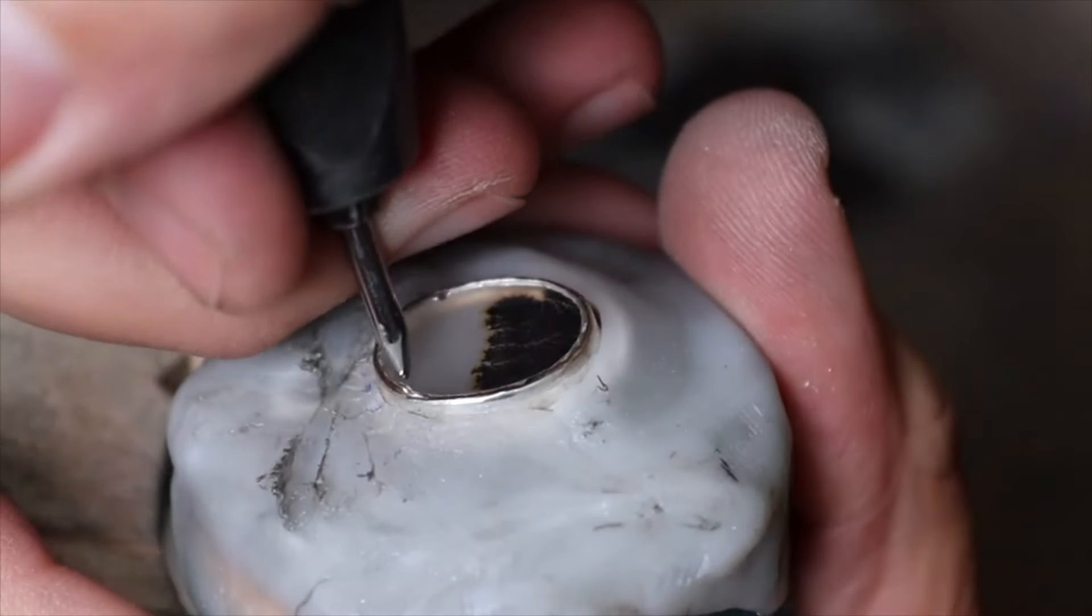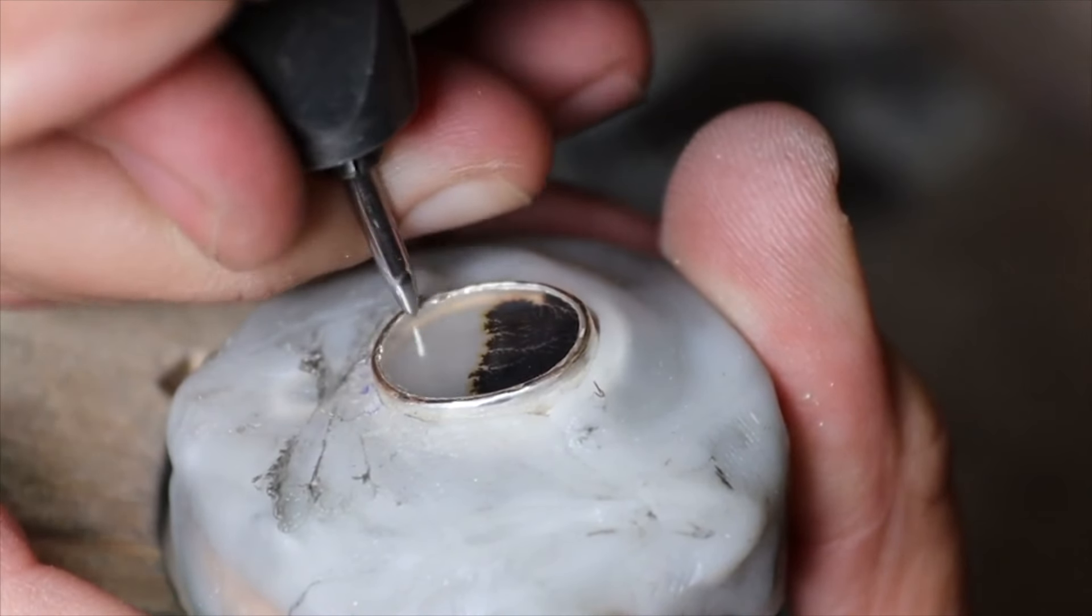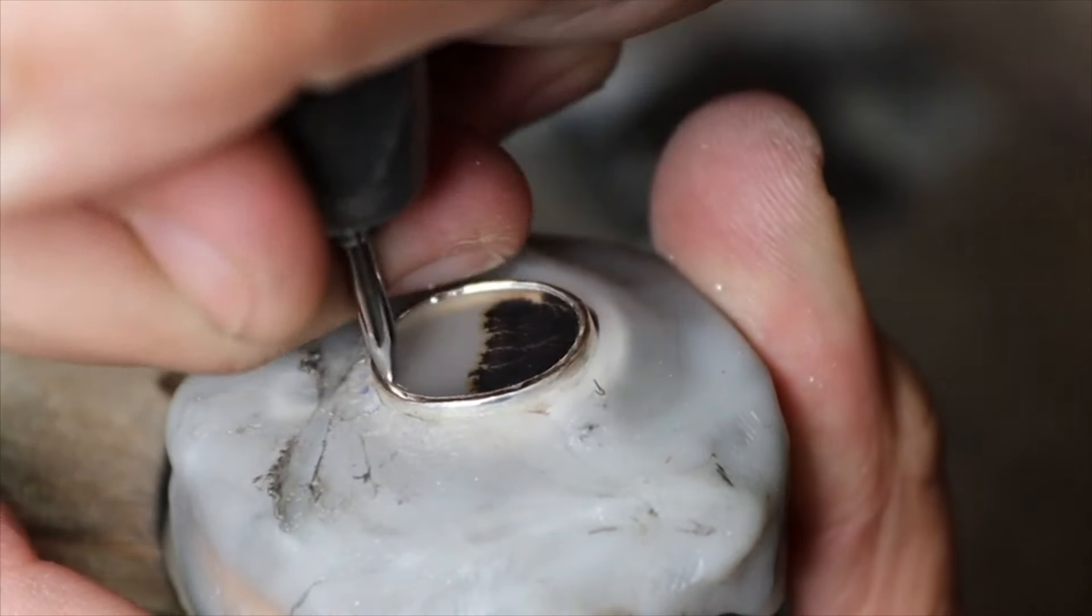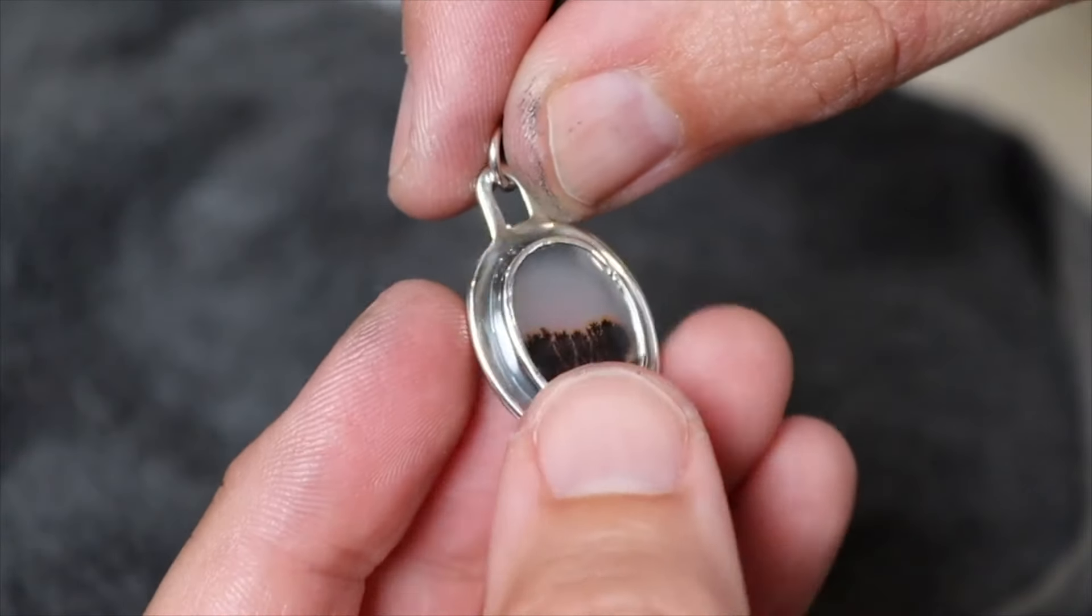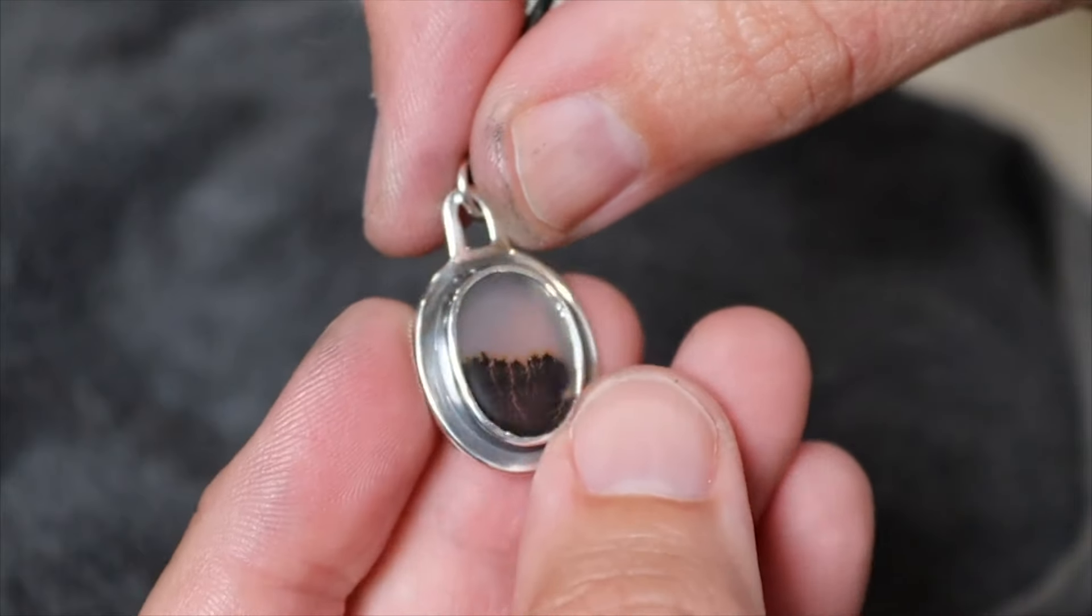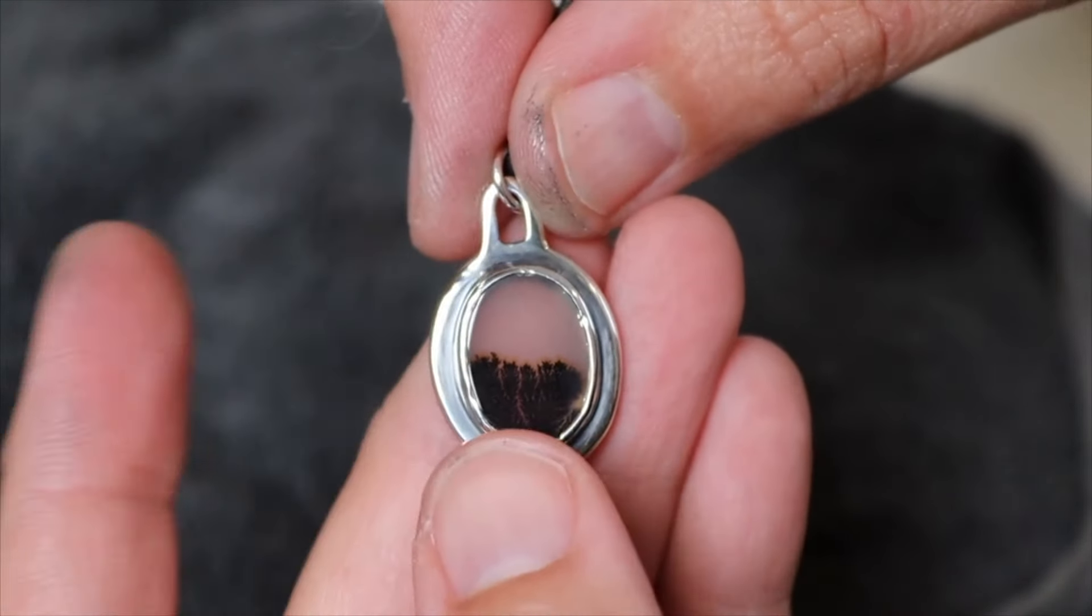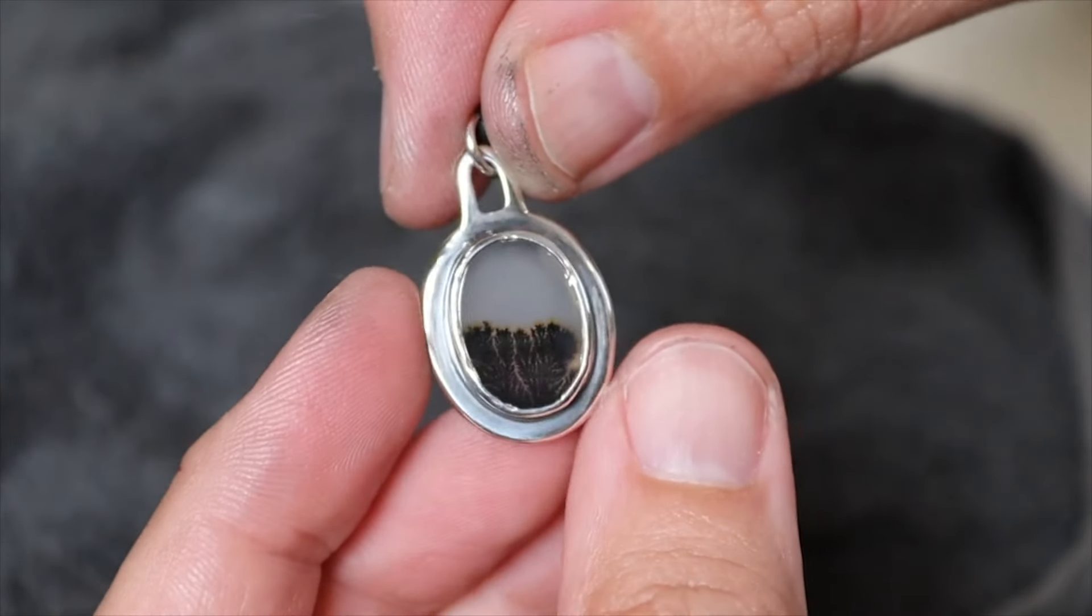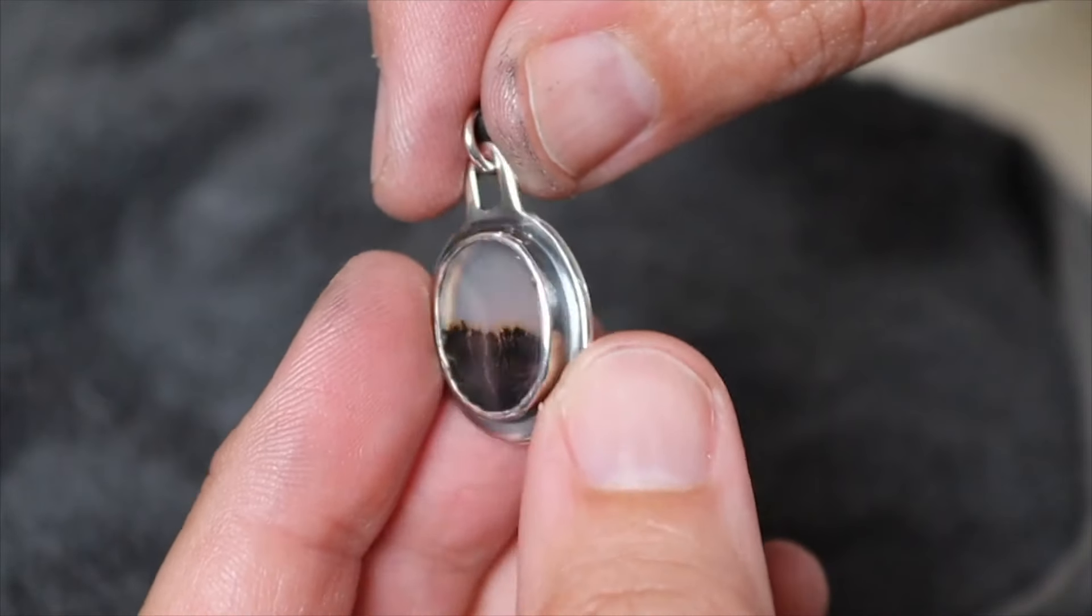And I will use my needle burnisher to clean up the inside here. And this is it. And this is what your first stone setting can look like. If you are curious to see how you can make a setting like this for a ring, then check out this tutorial. And I hope you'll have a lot of fun practicing and just enjoy making beautiful things.